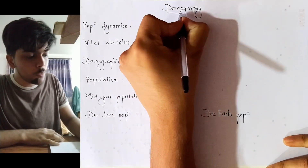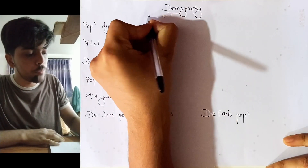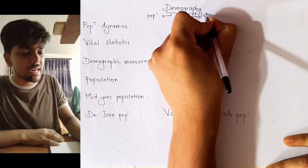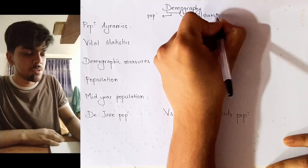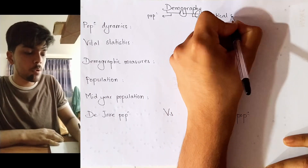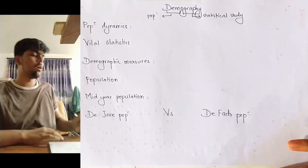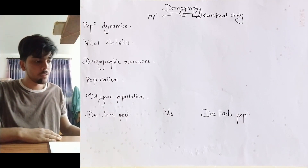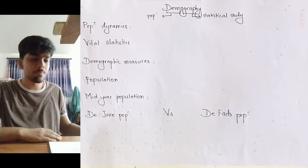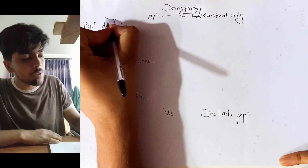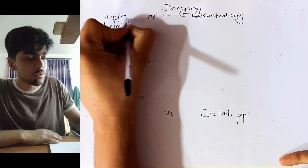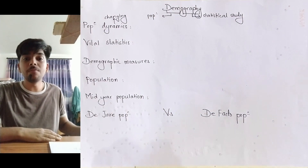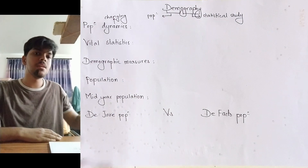Demography. Demo refers to population and graphy refers to statistical study. So the statistical study of population is called demography. Under demography there are some basic ideas that you need to know. First is population dynamics. The word dynamics means changing, so population dynamics means the study of the reasons of changing population.